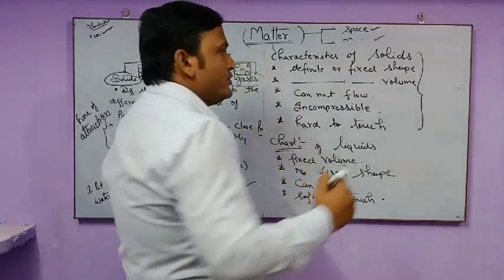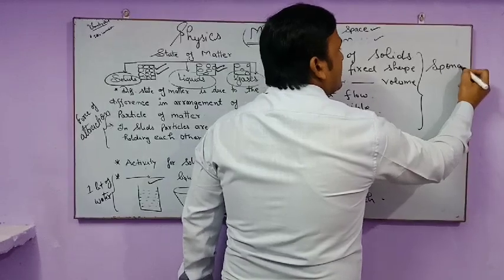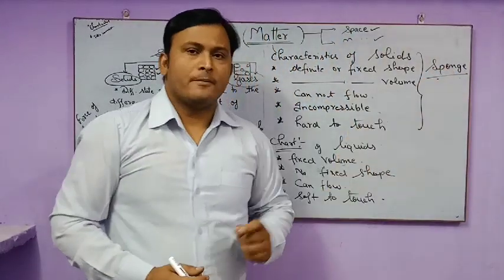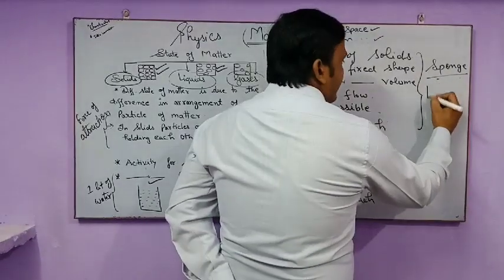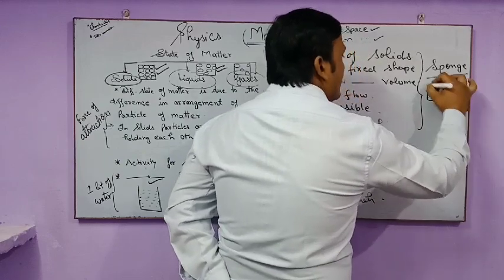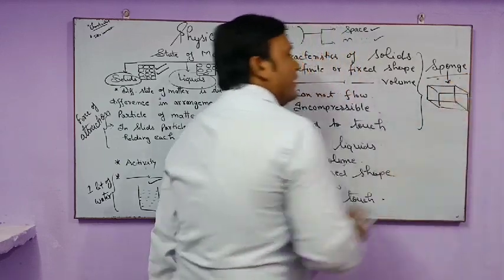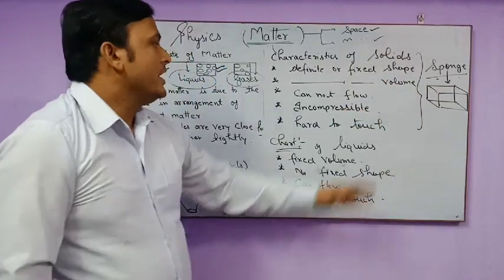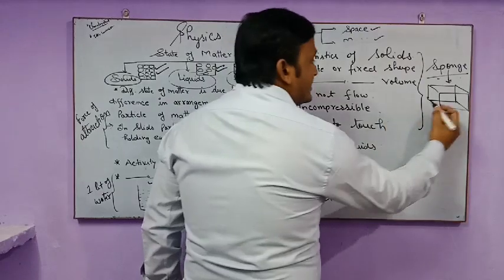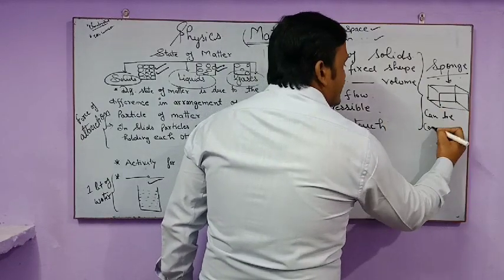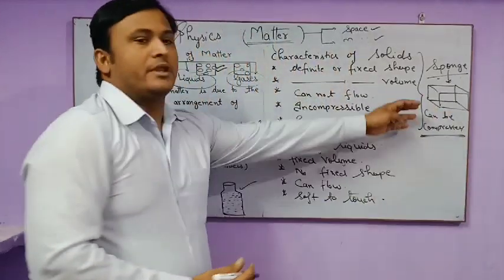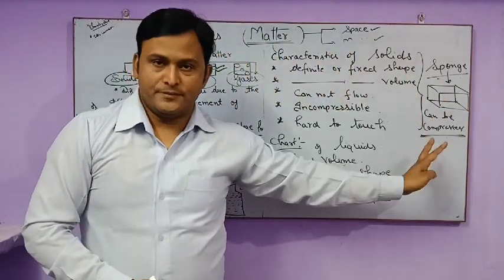Now there is an exceptional case for solids. I told you that solids are incompressible. But consider a sponge — it has a definite shape and definite volume, and it is hard to touch, but it can be compressed. So sponge is an exceptional case of a solid that is compressible.